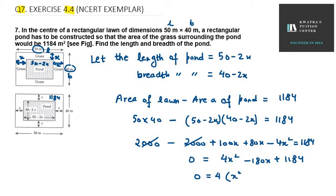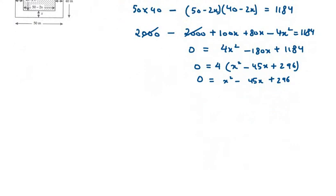x square first term, second term will be minus 45x, last term will be 296. So we will bring 4 to the left-hand side. So 0 equal x square minus 45x plus 296. Now in this case, we will simplify using factorization method.